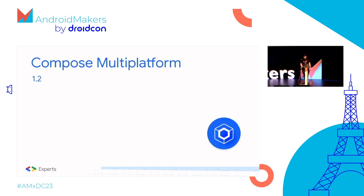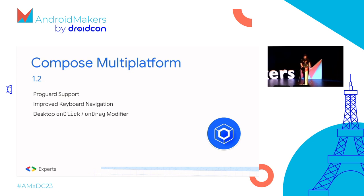Compose Multiplatform 1.2 introduces Program Optimizer for obfuscation without special configurations — it should just work out of the box. Improved focus management for keyboard navigation with modifiers, improved sliders, new on-click and on-drag modifier for fine-grained desktop click handling including modifier keys like control or shift. Introduction of RTL support and Conveyor compatibility — a nice integration that allows you to distribute your app with online updates.